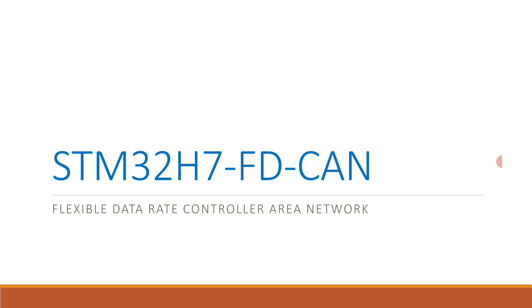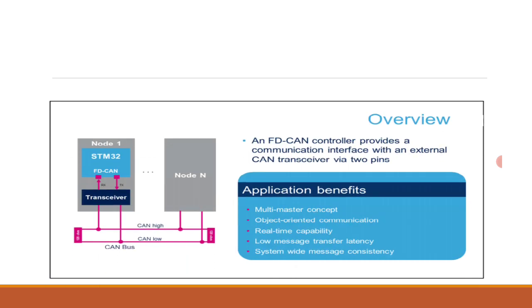The Flexible Data Rate Controller Area Network is a standard serial differential bus broadcast interface that enables the microcontroller to communicate with external devices connected to the same network bus. The FD CAN interface is highly configurable, enabling nodes to connect using just two wires. Applications benefit from multi-master concept with message priority, object-oriented communication — no node addressing but content identification — real-time capability with low message transfer latency, and system-wide message consistency with error detection and management mechanisms.